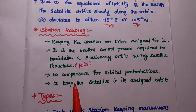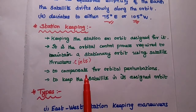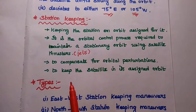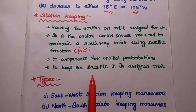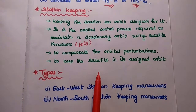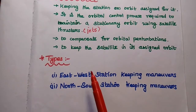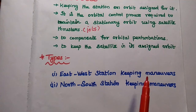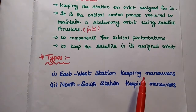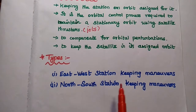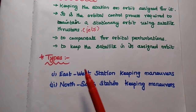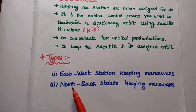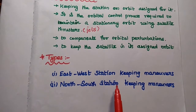Station keeping methods are mainly used to compensate the effects due to orbital perturbations and to keep the satellite in its assigned orbit. There are two types of station keeping maneuvers used in satellite communication — a system which uses propulsion to change the orbital path. The first is east-west station keeping, and the second is north-south station keeping.